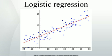Case-control sampling. Suppose cases are rare — then we might wish to sample them more frequently than their prevalence in the population. For example, suppose there is a disease that affects one person in 10,000, and to collect our data we need to do a complete physical. It may be too expensive to do thousands of physicals of healthy people in order to get data on only a few diseased individuals. Thus, we may evaluate more diseased individuals — this is also called unbalanced data. As a rule of thumb, sampling controls at a rate of 5 times the number of cases is sufficient to get enough control data. If we form a logistic model from such data, if the model is correct, the parameters are all correct except for the intercept, which we can correct if we know the true prevalence.